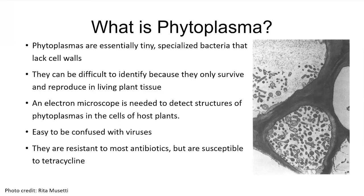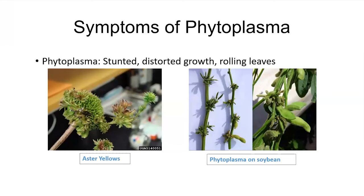Let's talk about phytoplasma disease symptoms. One of the most important symptoms is stunted and distorted growth. You may see rolling leaves and eventually the plant will die back. One of the most famous phytoplasma diseases is called aster yellows. The infection triggers hormonal disorder, causing overgrowth symptoms on the flowers. On soybean, you can see cluster flowers that look definitely abnormal.